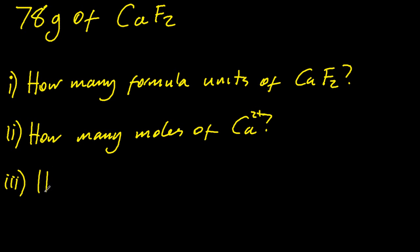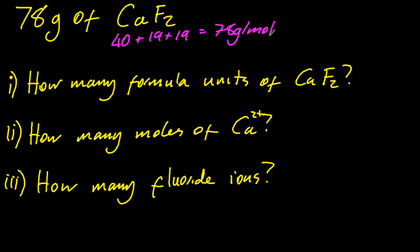For ions. How many moles of calcium 2 plus ions? And how many fluoride ions? Well, formula unit is just similar to molecule. So luckily, calcium fluoride has a molar mass of 78 grams per mole. And we have 78 grams of it. So that's 1 mole. And 1 mole is always 6 times 10 to the 23.